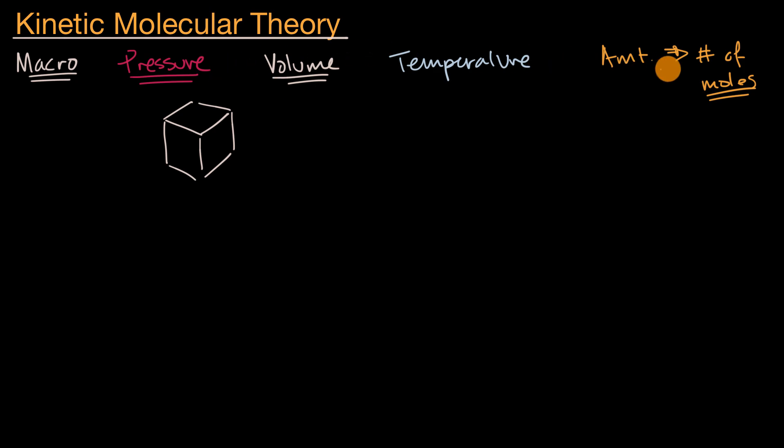So all of these things, we can measure at a macro level. And we know that we can connect them all with the ideal gas equation that tells us that pressure times volume is equal to the amount of the gas we're dealing with. And this is, of course, we're talking about an ideal gas. And in future videos, we'll talk about how some gases approach being an ideal gas while some are less than ideal.